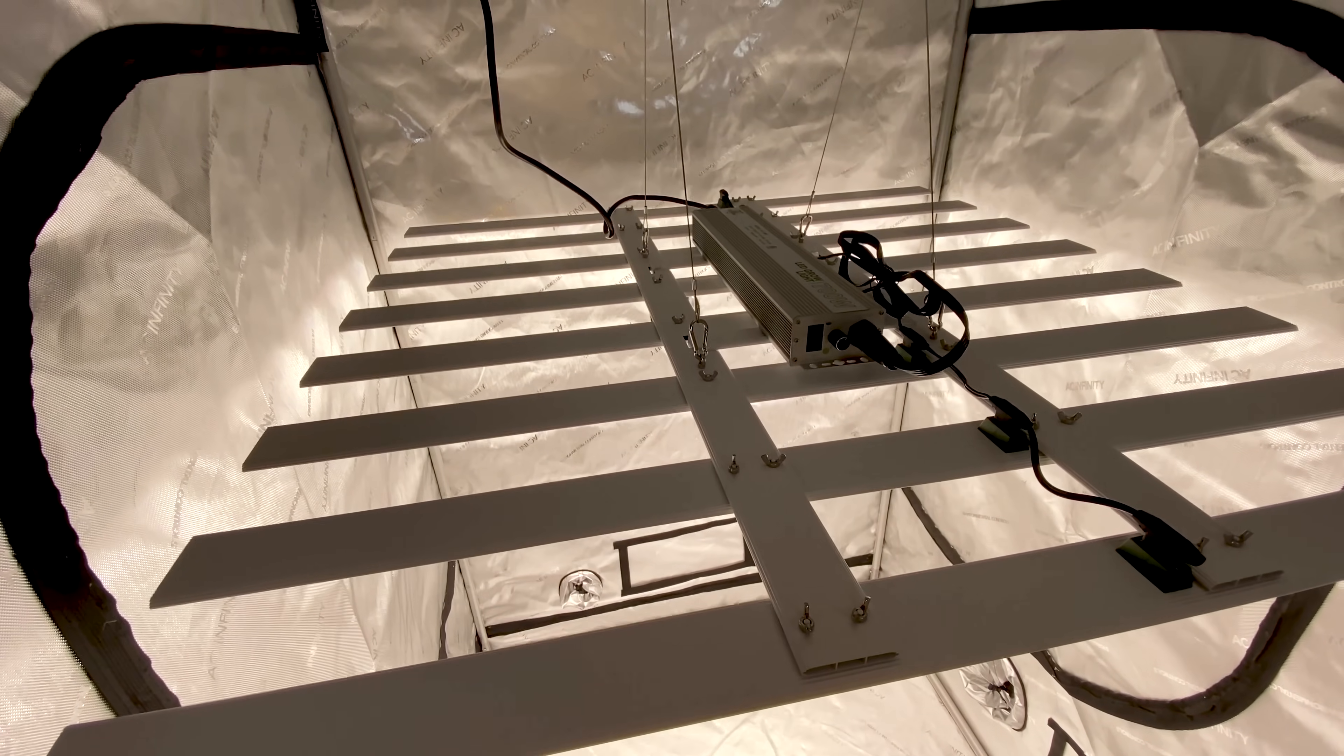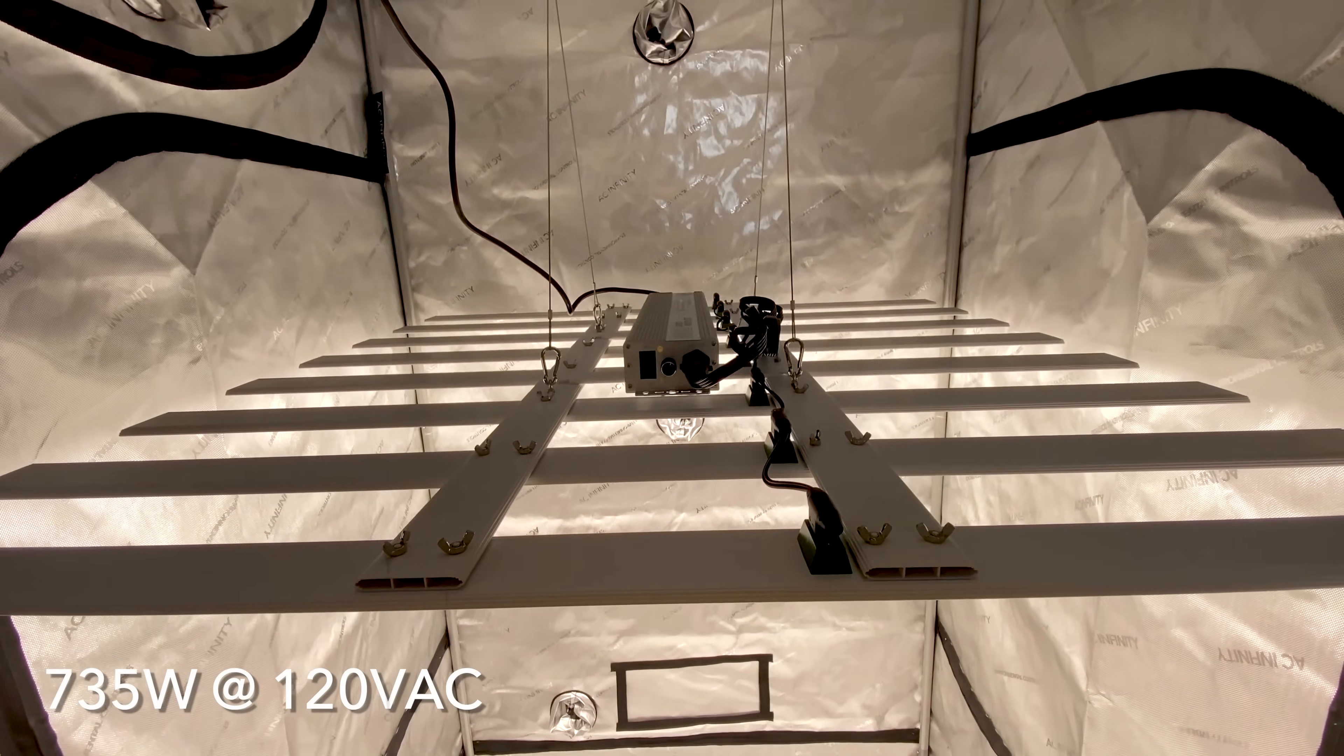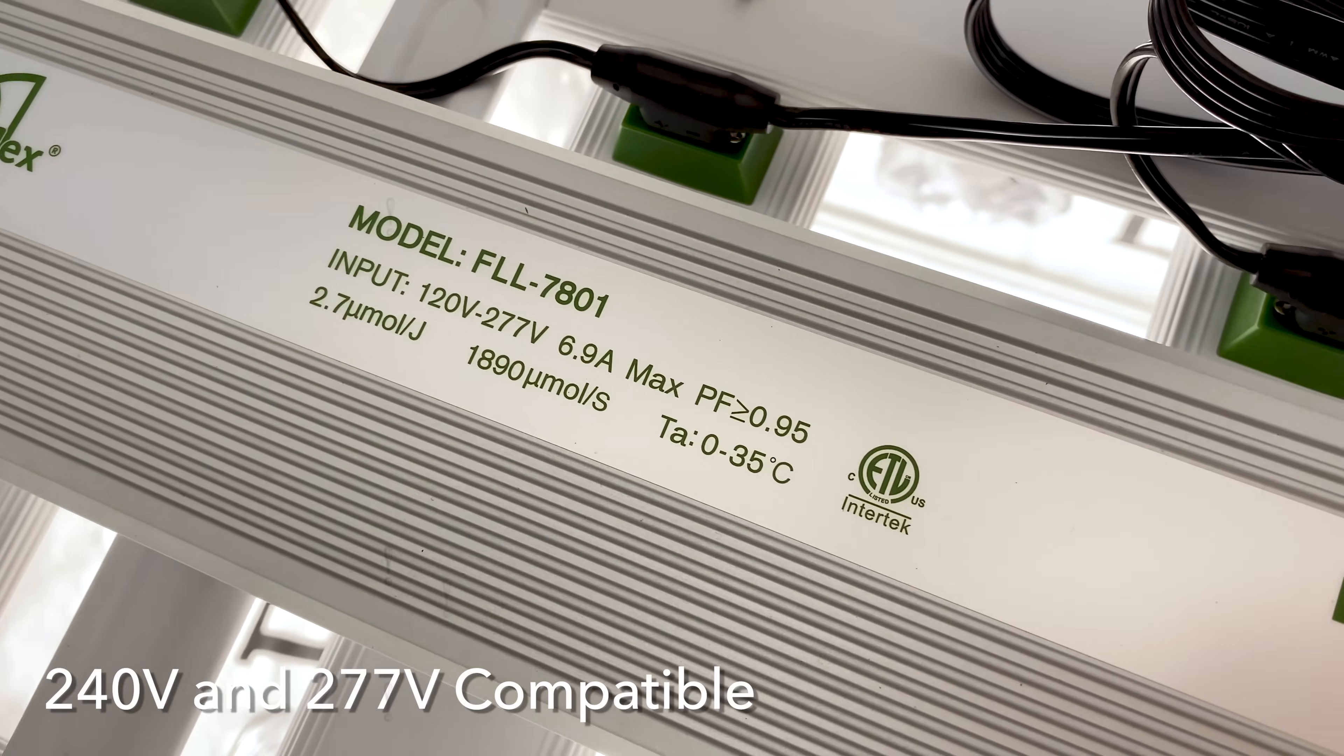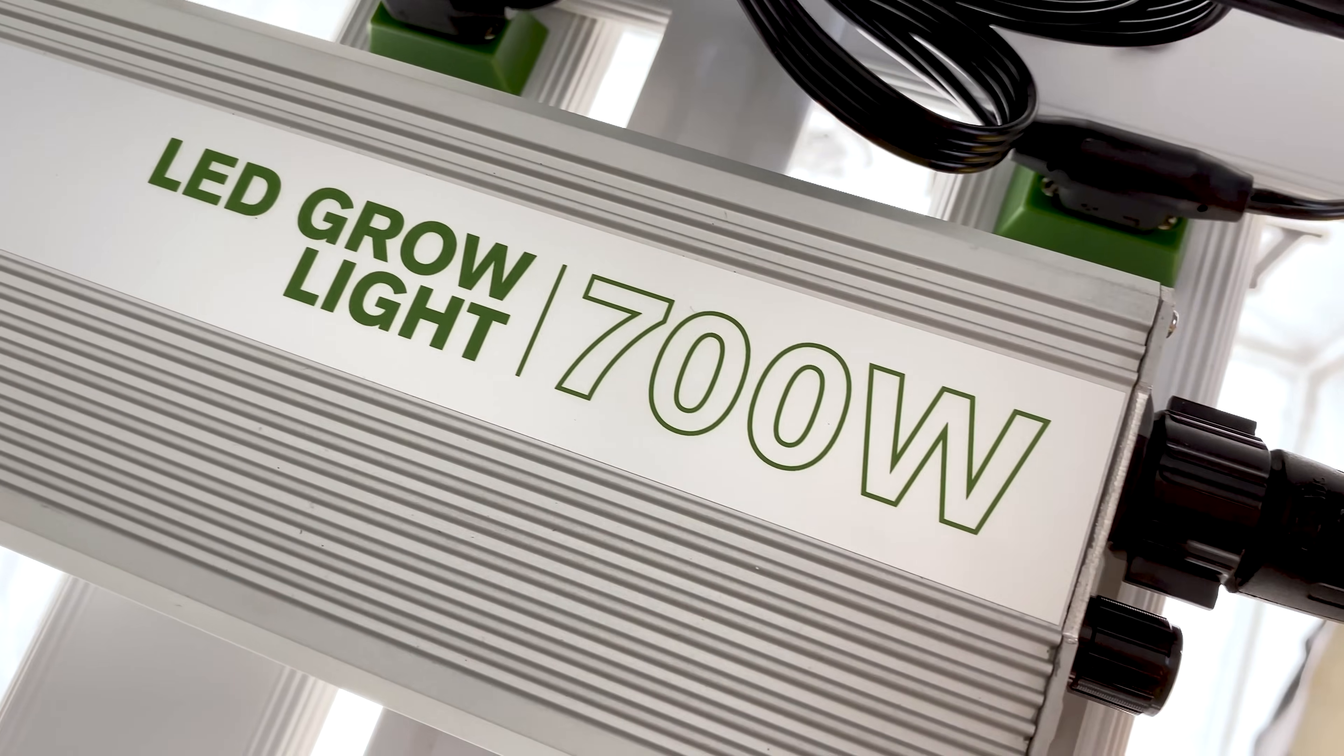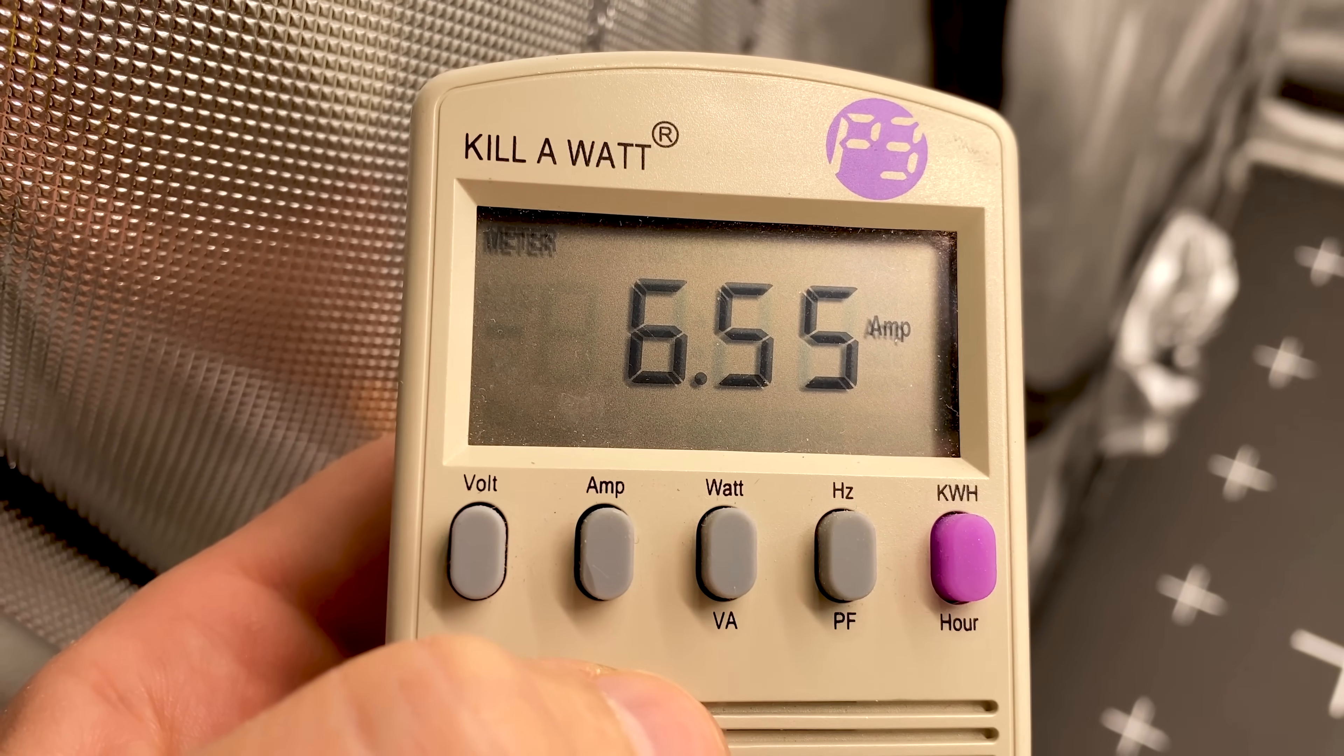The FloraFlex 700W draws around 735 watts on 120 volts at the wall but can also be operated on 240 volts and 277 volts AC. My measurements at 114 volts showed a wattage draw of 746 watts and 6.55 amps.